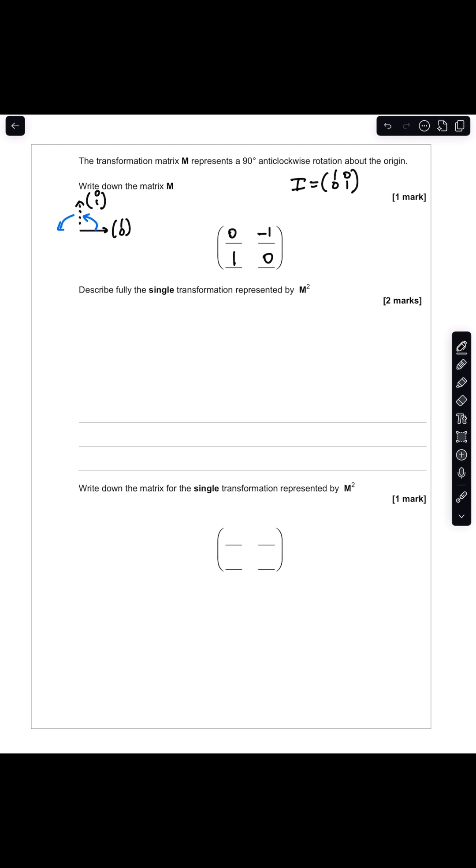Describe fully the single transformation represented by M squared. So given it's M squared, that means it's M followed by M. So in other words, you're repeating the matrix transformation for M in the previous part again. So instead of rotating anti-clockwise by 90 degrees,